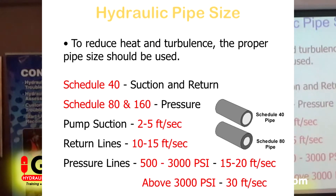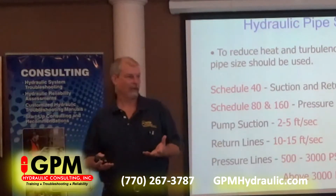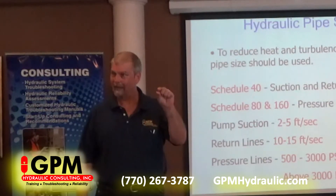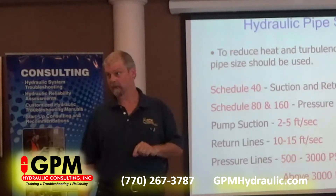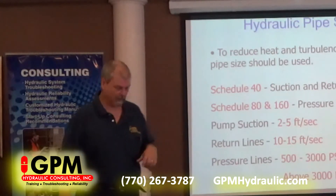For example, take your suction and return — you want to use Schedule 40. Pressure is Schedule 80 or 160. Basically, what that means is it's the wall thickness of the pipe. For a low pressure line, which would be suction and return, you don't need a thick wall pipe, but for pressure, you definitely do. That's what we're talking about — Schedule 40 or 160.